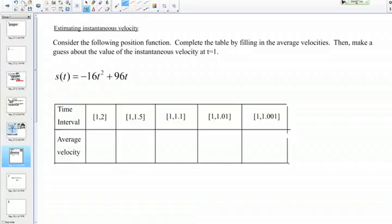Our position function is S(t) = -16t² + 96t. If we look at the table we're given, we see in that top row we have different time intervals. These time intervals are getting smaller and smaller, getting tighter around the point t = 1. In the second row we have blanks to fill in the average velocity for each of those time intervals.